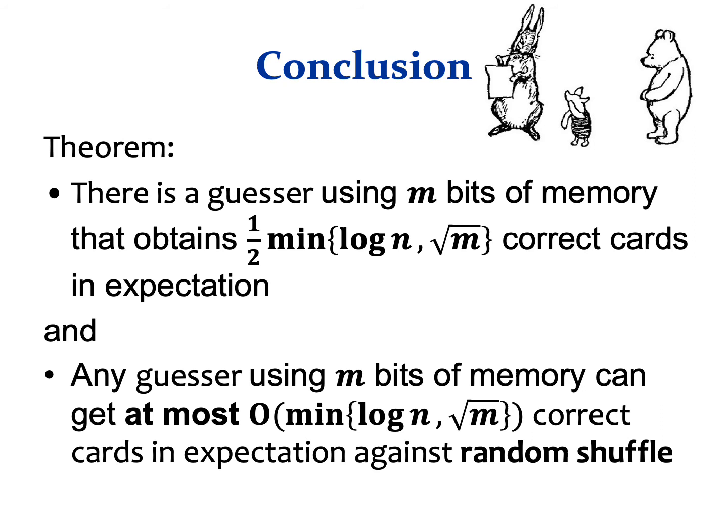As a conclusion, we showed that there is a guesser using m bits of memory that manages to obtain half of square root of m correct guesses in expectation, and that any guesser with m bits of memory can get at most order of square root of m correct guesses in expectation when playing against a random shuffle dealer. We can randomize this guesser by sampling a random permutation, and these results hold also for any static dealer.